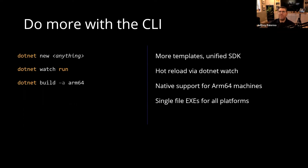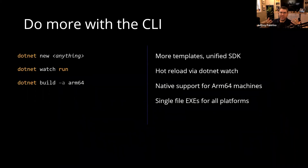When .NET Framework came out, your application was a directory of files — and it has been a directory of files ever since. You have a .EXE, and then you have just a ton of other DLLs. Even with .NET 6, the default is a directory with the .EXE as your entry point, plus another DLL for every Visual Studio project and every library dependency.